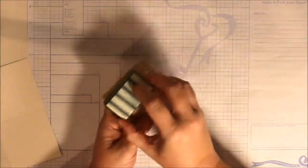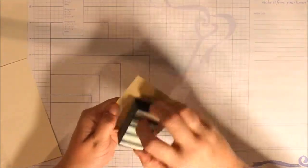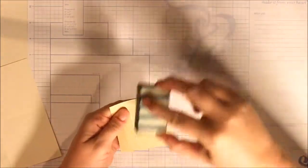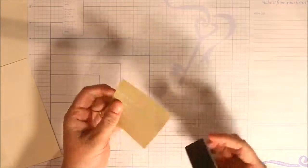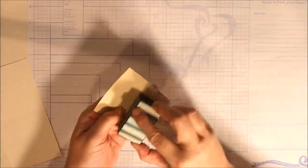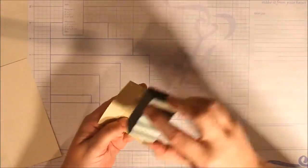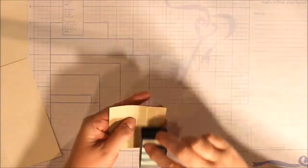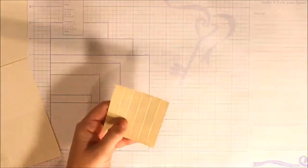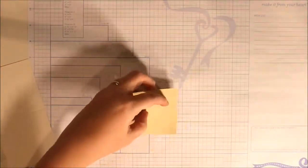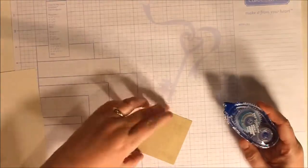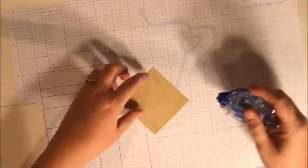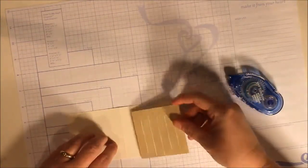Then we're going to take a sanding block and just sand the scored lines just to give it a little bit of distressed look. Using the Tombow adhesive, I'm going to glue it to the front of the card.